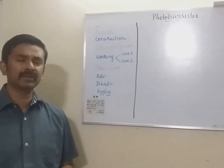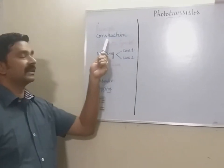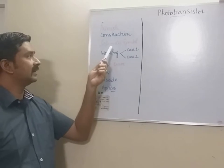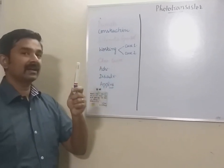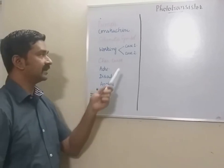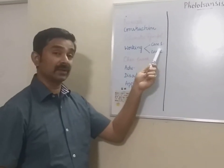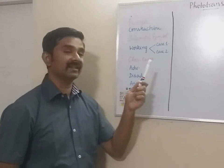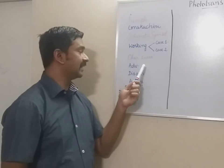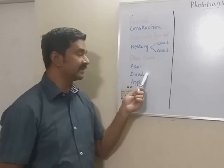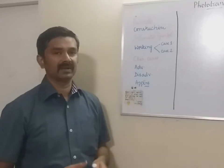The menu for this session will start with the principle of operation. We will get into the construction of phototransistor, understand the schematic symbol representation, and the working of phototransistor with two cases — case 1 when light falls on the phototransistor, case 2 when light does not fall on it. We will draw the characteristic curve and list down the advantages, disadvantages, and applications of phototransistor.